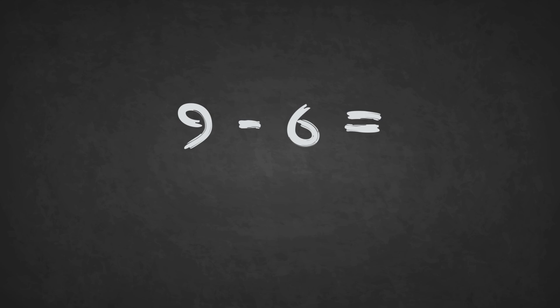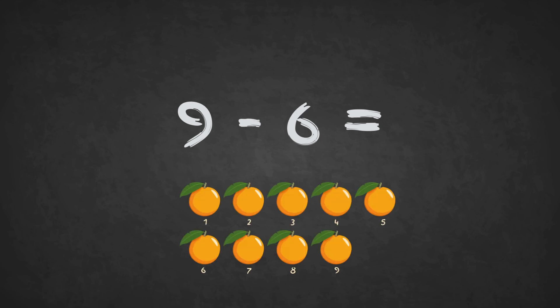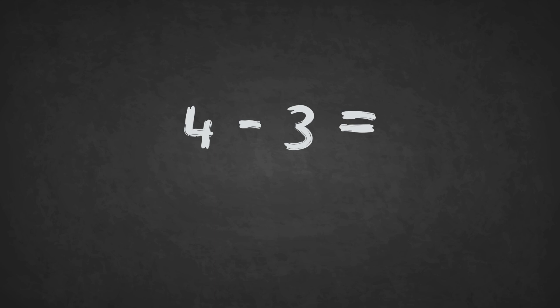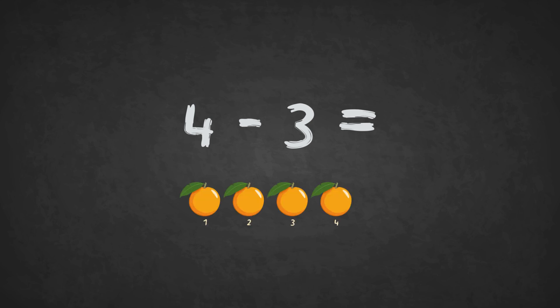9 minus 6 equals? 1, 2, 3. The answer is 3. 4 minus 3 equals? 1. The answer is 1.